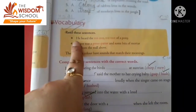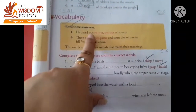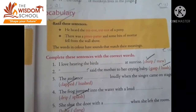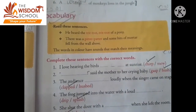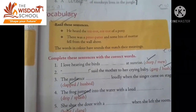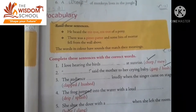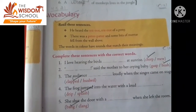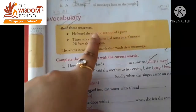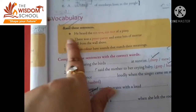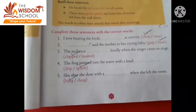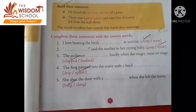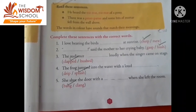Students, see here in vocabulary. Read these sentences: 'He heard the trit-trot, trit-trot of a pony.' This is the sound of a pony — trit-trot. 'There was a pitter-patter and some bits of mortar fell from the wall above.' The words in color have sounds that match their meanings. You have to select the correct option according to the sentence.